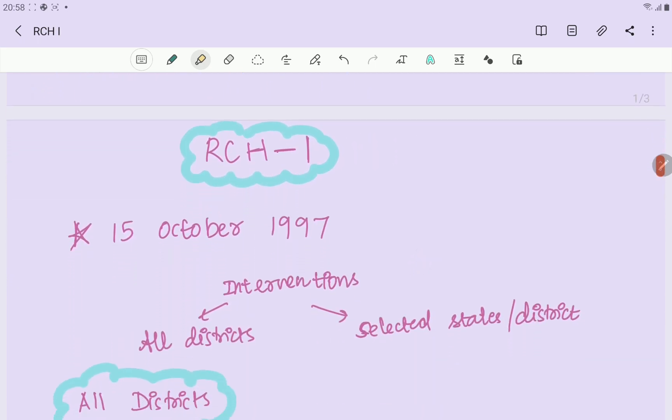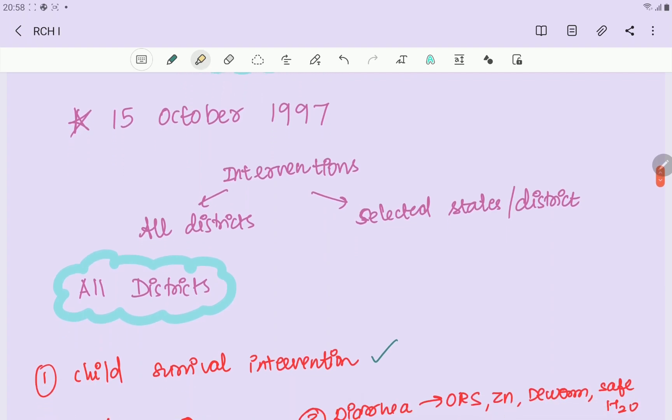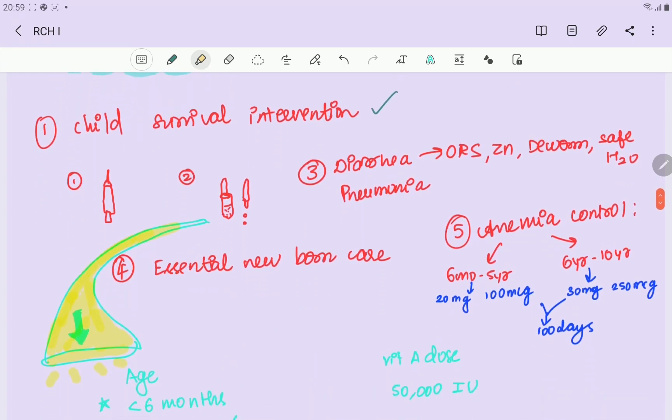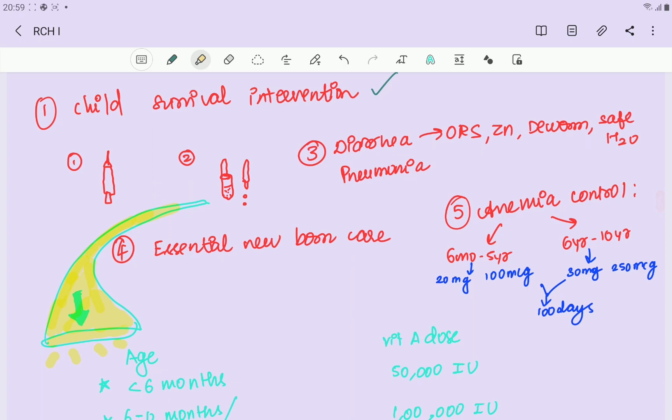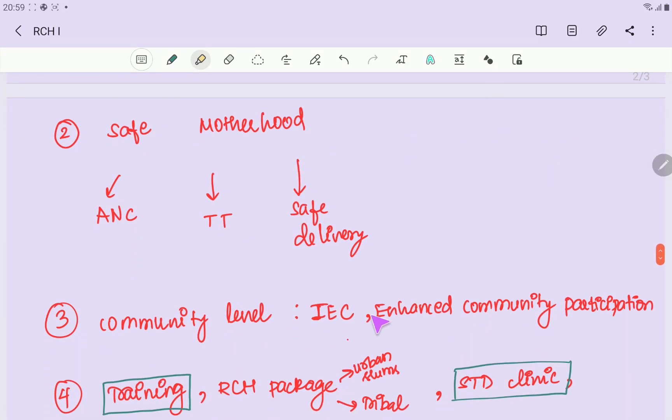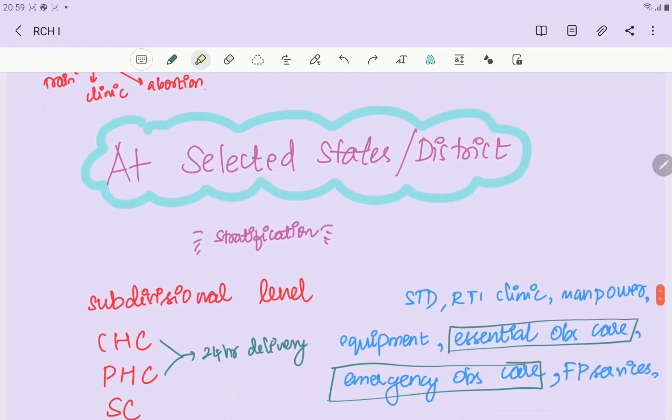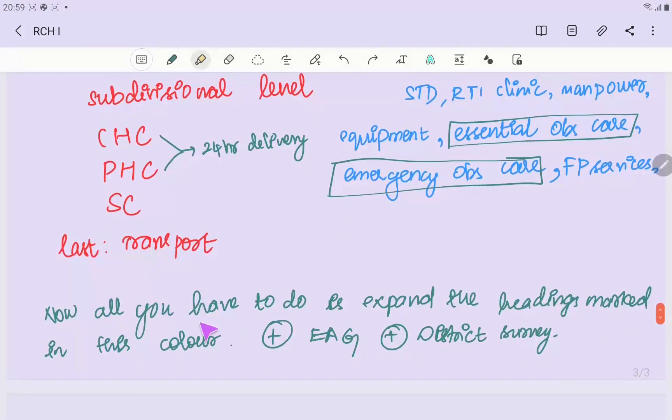RCH1 started 15th October 1997. What about interventions? Selected state and district level interventions were managed in phases across all states. If we look at child survival intervention, there will be safe motherhood and community level interventions. Let me take a green color, circle here and underline it.